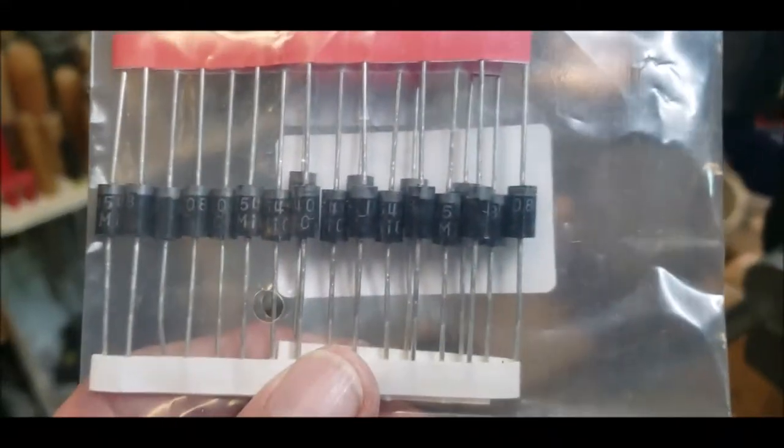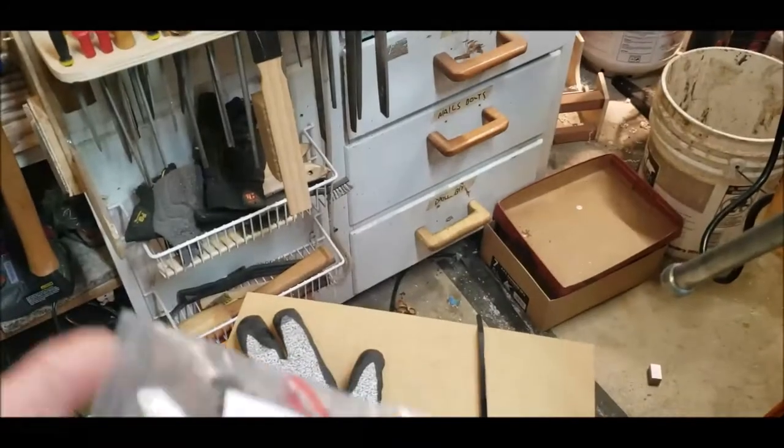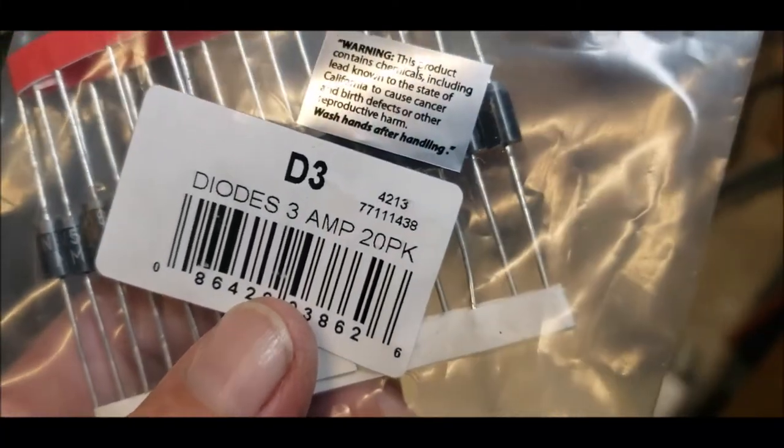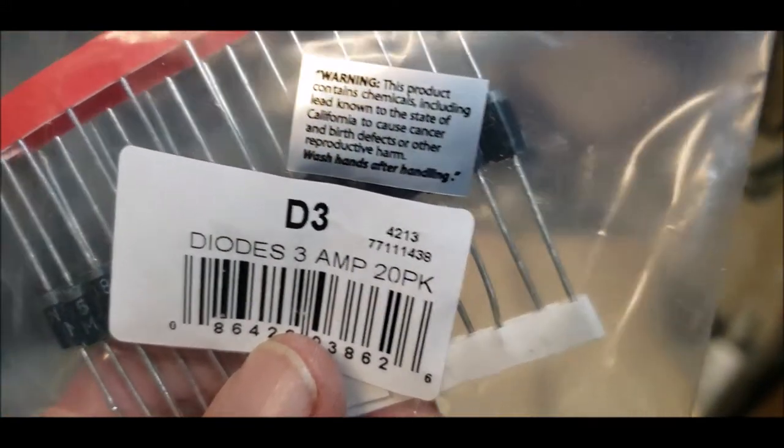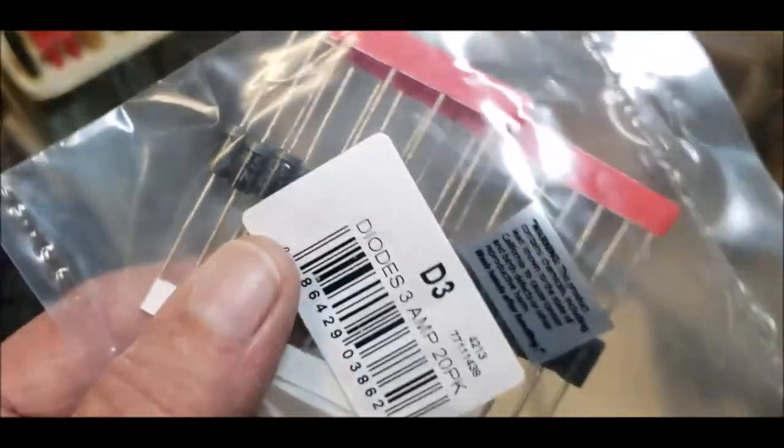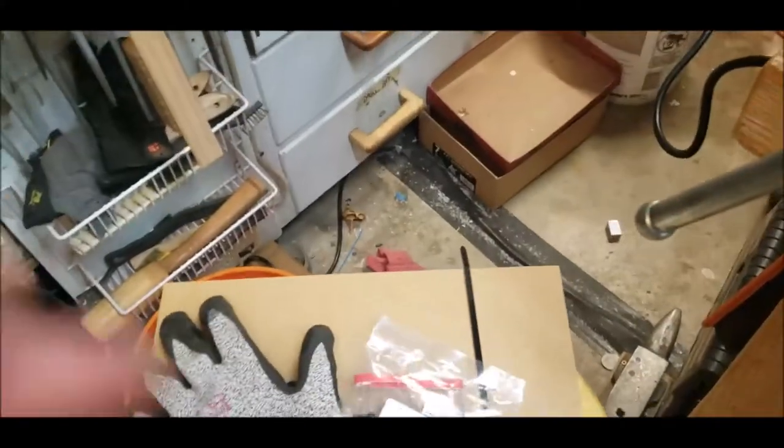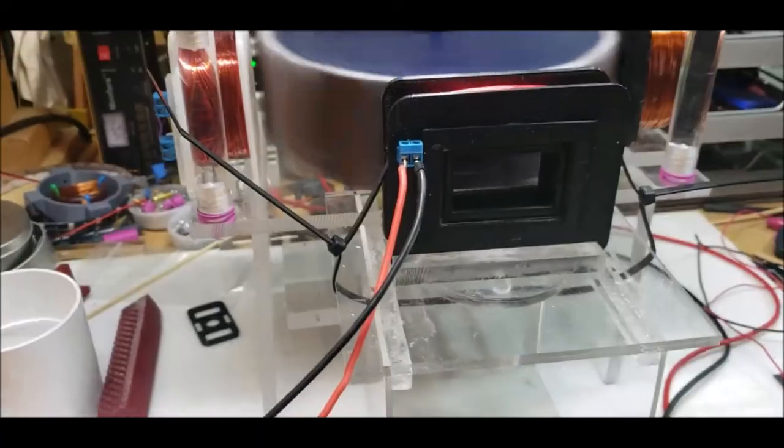My diodes just came in so that I can make my bridge rectifier. Even though I have several rectifiers that I bought, I want to make my own. But I'm not sure if this is the right diode. I wanted one that can withstand some higher voltage and amperes. So these are 3 amp diodes. I have a bunch of diodes already. I don't know if these will work, but I will find out. They came in, man. And this guy's looking awfully gray, kind of like metal. Cool.